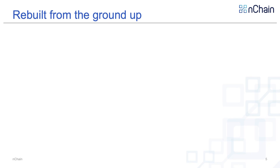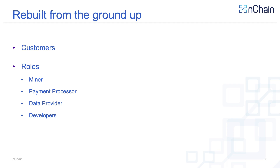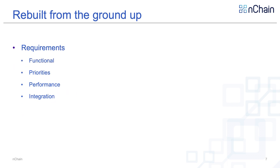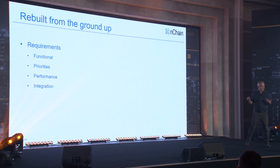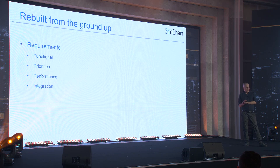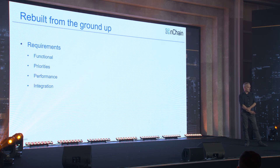Rebuilding from the ground up is starting by looking at customers, looking at the roles that customers play within the software, what roles they need, what services they need to provide. It goes on to doing functional requirement analysis — what roles need what. There are different requirements for different roles. A miner has different priorities than a payment processor. Once we know these, we can account for them in the software. Writing actual code comes later, and yes, we will reuse a lot of the Bitcoin SV code, because it's there and it makes sense.